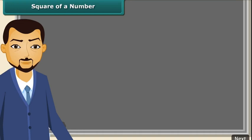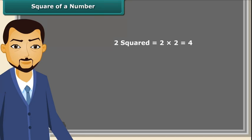Let's learn about squares. How can we square a number? It is easy — just multiply the number with itself. You can also write the square in superscript. For example, 4² tells us that 4 is multiplied twice, which is equal to 16.